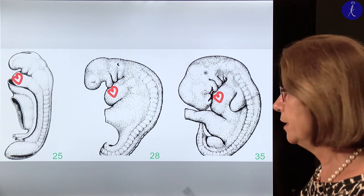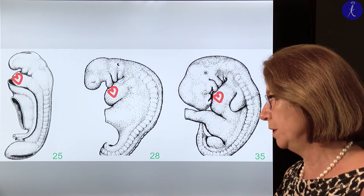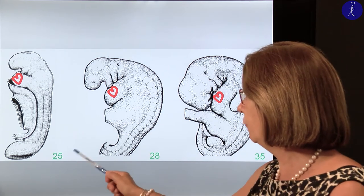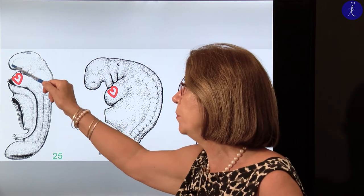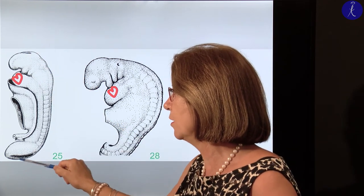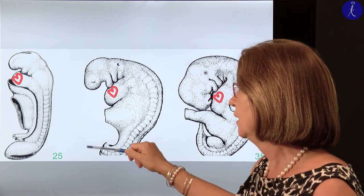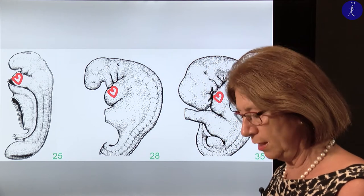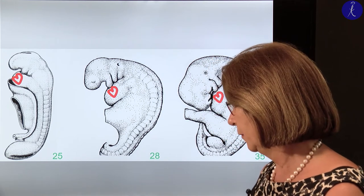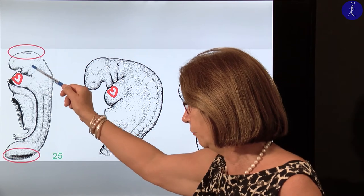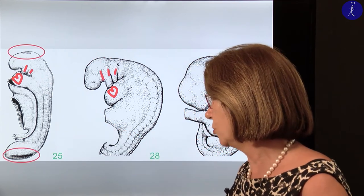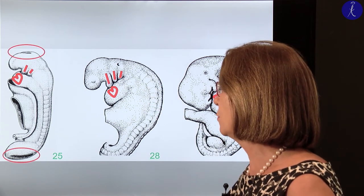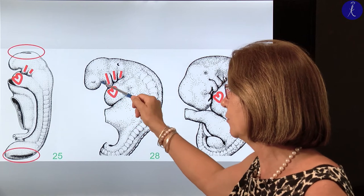Now we start to concentrate on the pharyngeal arches. On the fourth week, you see the embryo with the open anterior and posterior neuropore, which will close in a few days. The heart primordium is relatively big and with the folding it is already on the ventral surface. At the middle of the fourth week you see two of the pharyngeal arches, which by the end of the fourth week will increase to three visible arches, plus we have a frontal process.